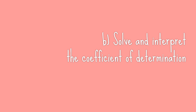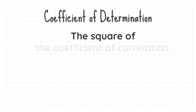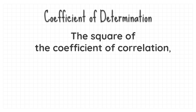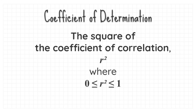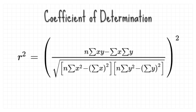Now let's learn how to solve and interpret the coefficient of determination. The coefficient of determination is the square of the coefficient of correlation, where r-squared is between 0 and 1 inclusively. So if you have the coefficient of correlation r, all you have to do is square your r.